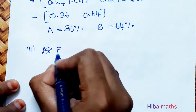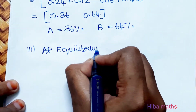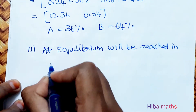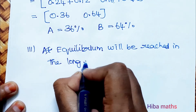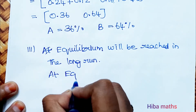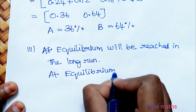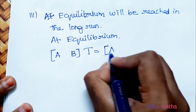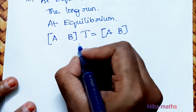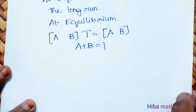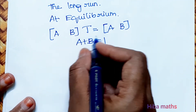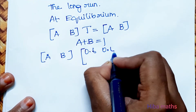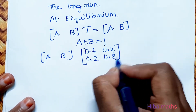Now we find the equilibrium — the long-run steady state. At equilibrium, [A, B] × Transition Matrix = [A, B], with the condition that A + B = 1. The transition matrix is [0.6, 0.4; 0.2, 0.8].